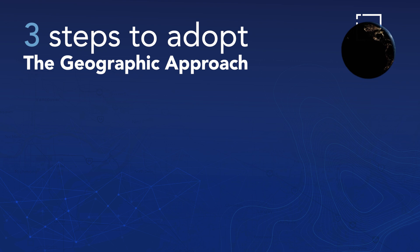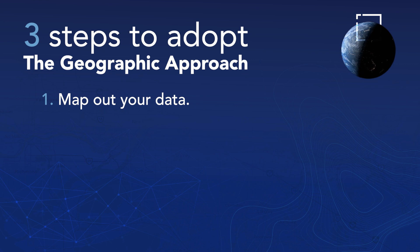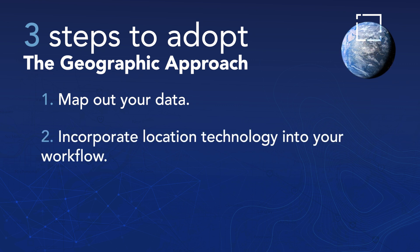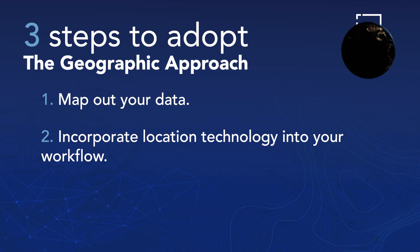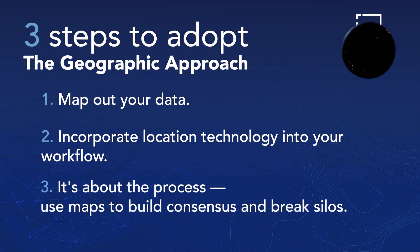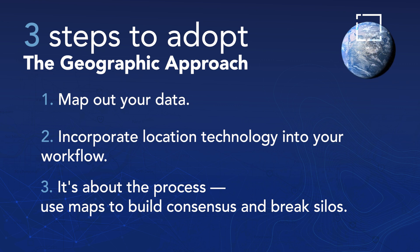Here are three steps to adopt the geographic approach. Number one: map out your data. Seeing data on a map gives you instant intuitive insights. Number two: incorporate location technology into your operational workflows. This means your field crew have live situational awareness based on their location and can directly update data from the field. Number three: leverage maps and the process of creating maps to build consensus and break silos. The geographic approach has much more to offer than end products — it is a framework to tell compelling stories, create common grounds, and accelerate collaboration.